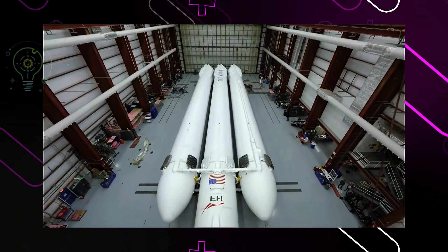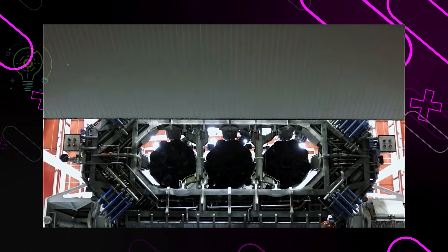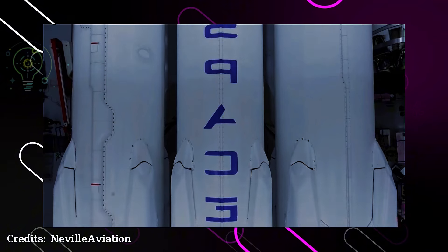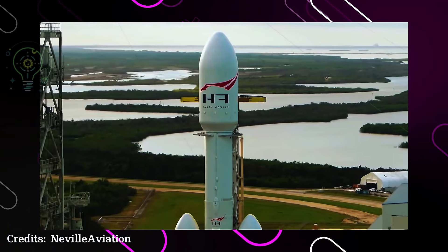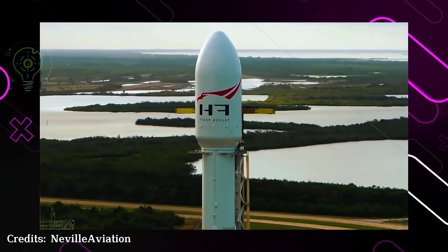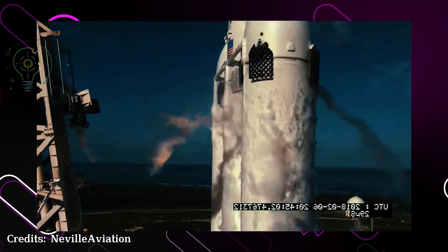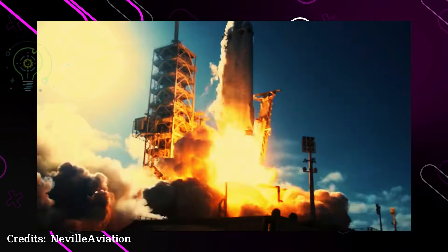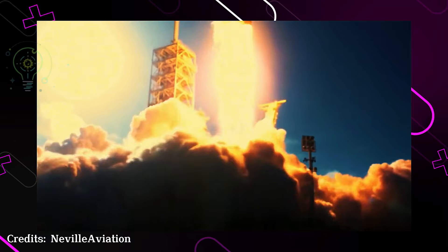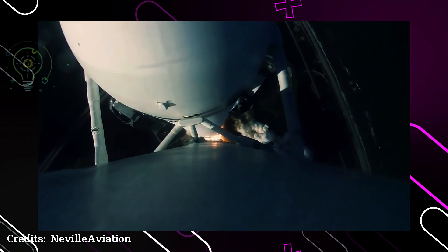Number three: Falcon Heavy. This is where things get serious. The Falcon Heavy is one of the most powerful rockets ever built. Combining three Falcon 9 cores, it gained worldwide fame when it launched a Tesla Roadster toward Mars. The heavy lift capacity and the spectacle of that launch put SpaceX in the global spotlight.